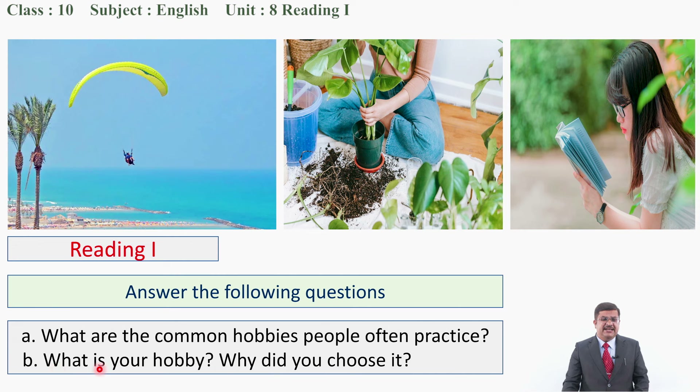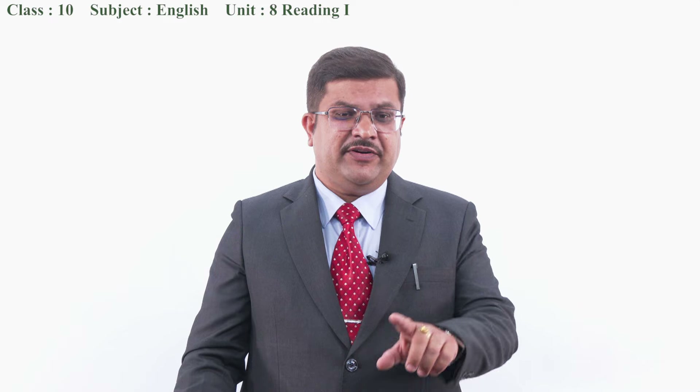Similarly, what is your hobby and why did you choose it? You can name one hobby — your hobby may be reading, watching movies, watching television, playing games, or playing a musical instrument. Why did you choose it? You may choose your hobby to have joy, to feel recreation, or to learn some ideas. For example, why do we read books? We read books to learn new things and to expand our knowledge.